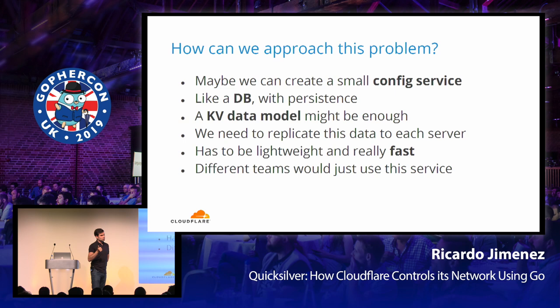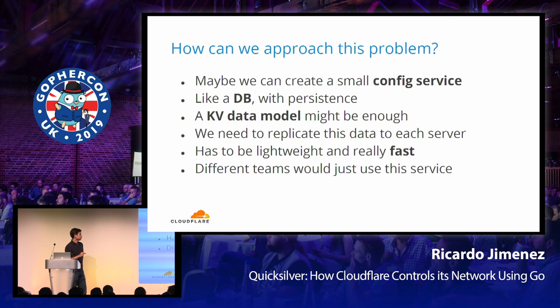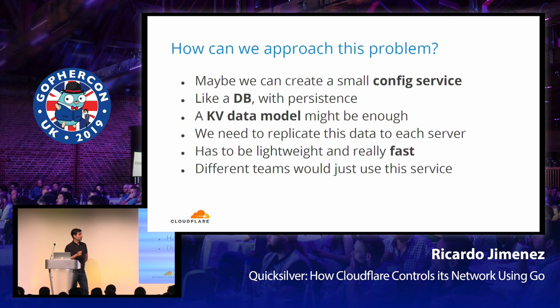For configuration, you can use a very simple data model — just a key-value data store should be enough. Developers place keys and values, and whenever a request crosses our network, each server component will go to the service and retrieve — for example, for a DNS query — the IP to respond. It has to be really fast. This software should be lightweight because we run a lot of software on each server and can't run a heavyweight database. We don't want application developers to complain that our config service is slowing them down.